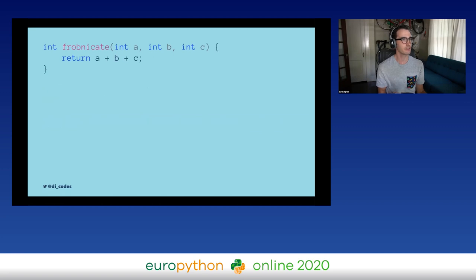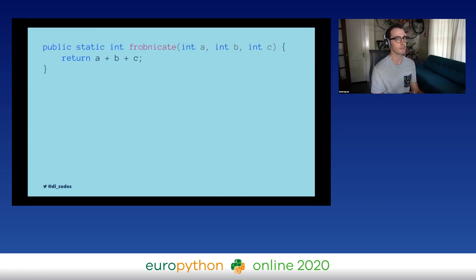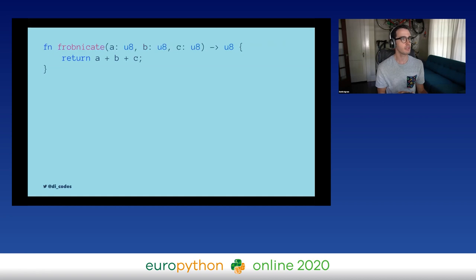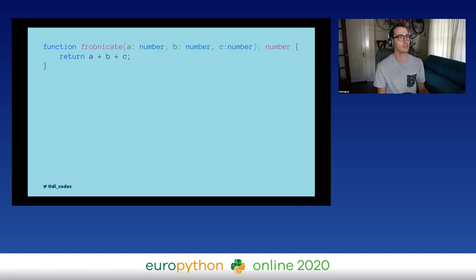This is C — the same `frobnicate` function written in C, where it declares `int` for the return type and `int` for all the variable types. This is Java — which has the `public static int` incantation at the beginning and also declares argument types as integers. This is Rust — which has really fine-grained control; it accepts and returns an unsigned 8-bit integer. And this last one is TypeScript: JavaScript doesn't have static types, but TypeScript does, and in TypeScript all numbers are just the `number` type.